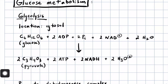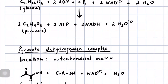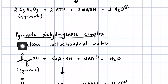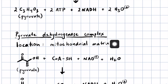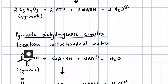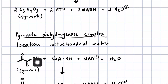Next is sort of a bridge between glycolysis and the citric acid cycle: the pyruvate dehydrogenase complex, which exists in the mitochondrial matrix. This reaction takes pyruvate, which is brought into the mitochondria from the cytosol, and does what's called an oxidative decarboxylation. So you're going to lose CO2, and then this carbon that used to be a ketone is going to end up as the thioester — that's the oxidation step.